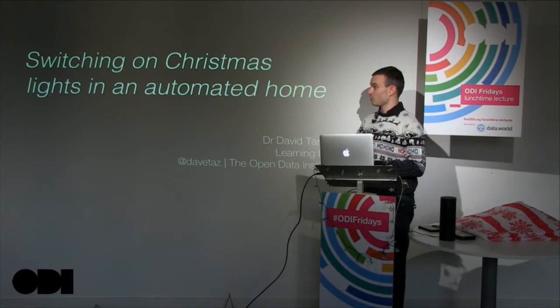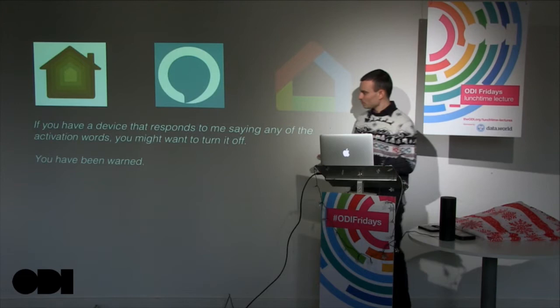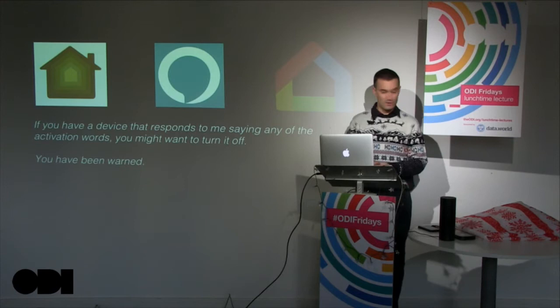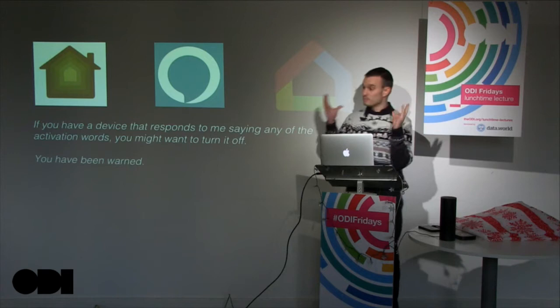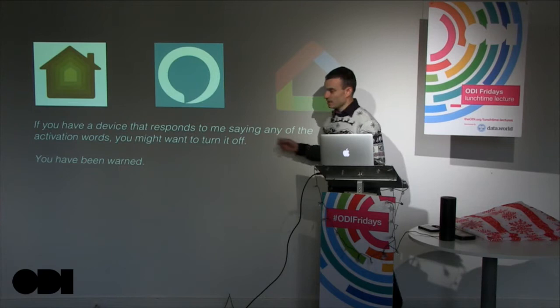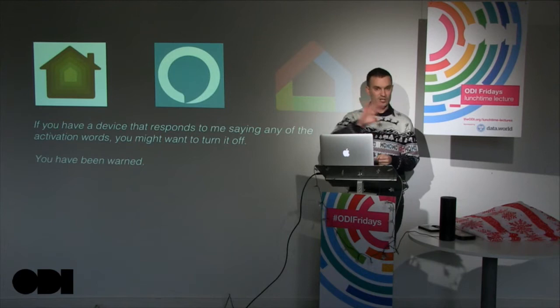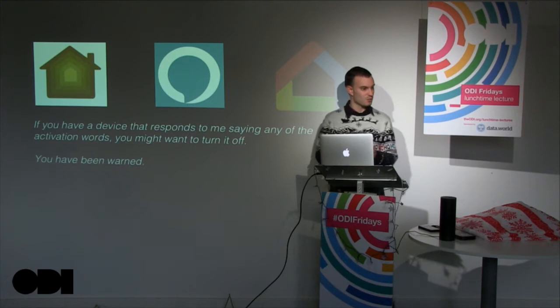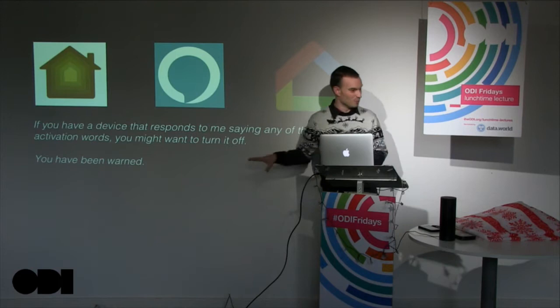So what are we going to look at today? The topic is Christmas lights in an automated home. I'm going to start where most of us might have heard of these devices — I put in the invite for this to ask the various devices to book you a place. We're going to look at the three different environments for automating your home. As a warning, if you've got any of these devices, I will be saying the activation words throughout this lecture and it might set things off. You have been warned.